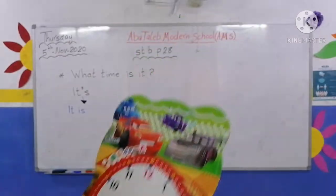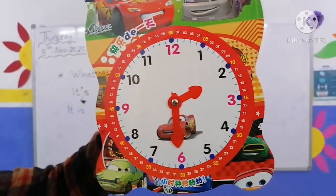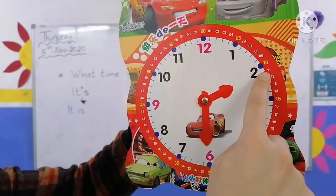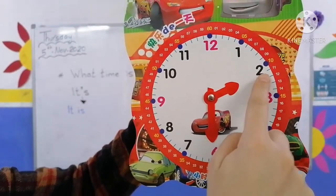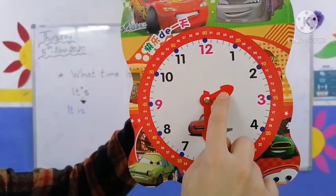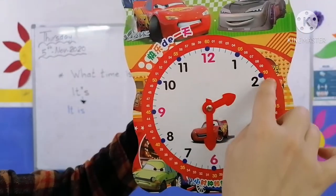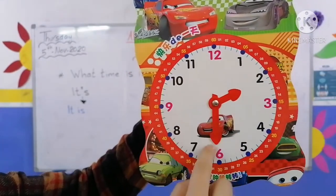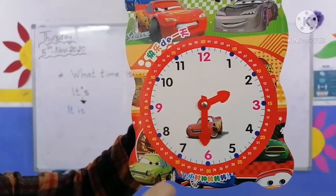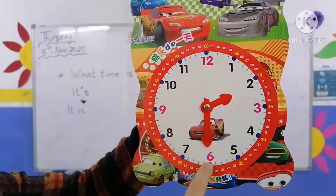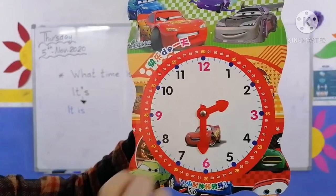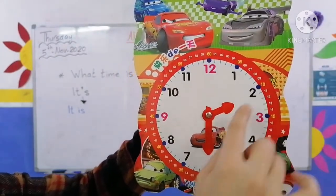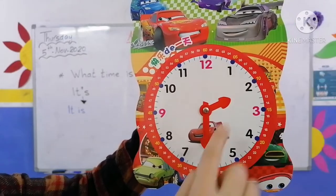Now look at the clock — what time is it? It's two thirty. The small hand (عقرب الساعة) is on two, so it's two. Then you look at the big hand (عقرب الدقائق) — it's on six. Six means thirty — half an hour. So we say: It's two thirty — الثانية والنصف.